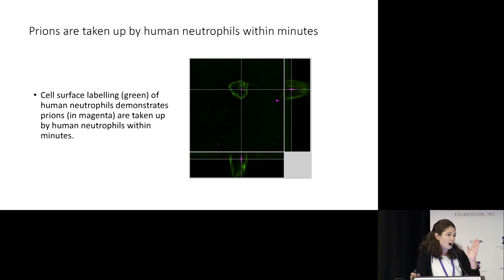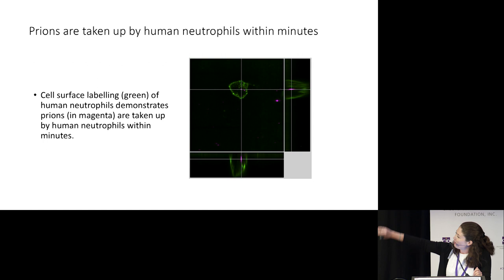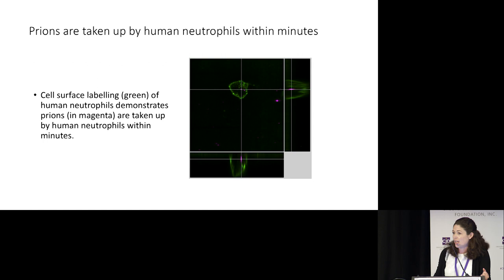Moving over to the right, that's a side view. The white line is the bottom of the cell, with the cell surface there in green. What you can see is that those purple prions are inside the cell. So these neutrophils, within minutes, are coming to pick up the prions and ingesting them, and we know this exposes them to very concentrated levels of those natural disinfectants.